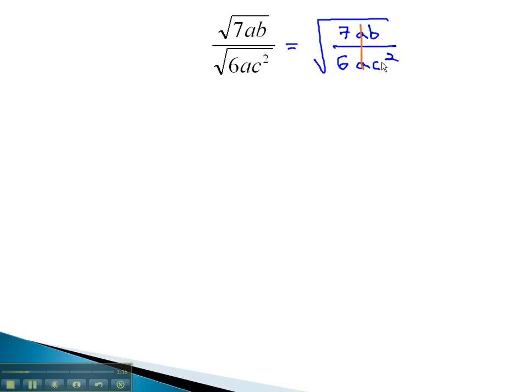Notice the a's can divide out. And now, let's bring it back to separate radicals. We have the square root of 7b over the square root of, finding the prime factorization of 6, 2 times 3, c squared.